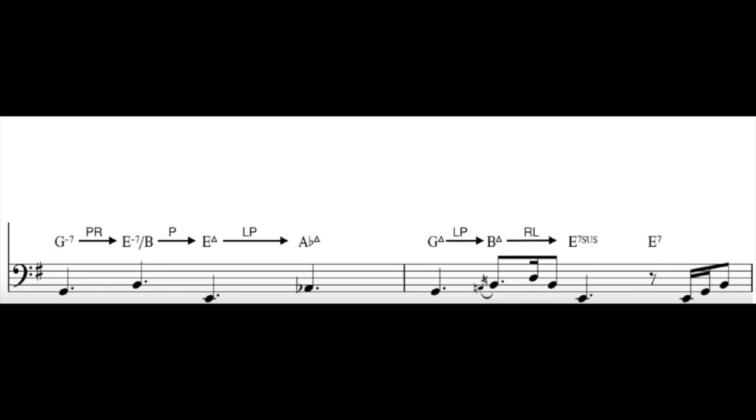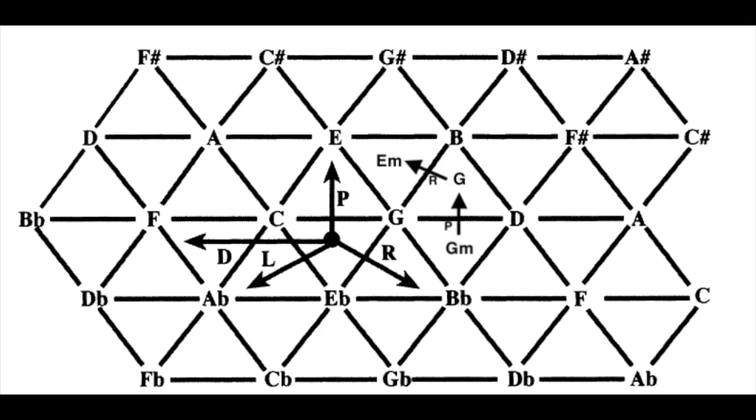The rest of the transformations are shown on the picture, feel free to check them yourself. Let's quickly double check the PR transformation from G minor to E minor. P applied to G minor creates G major and R applied to G major creates E minor.